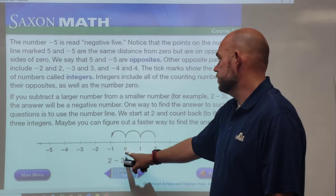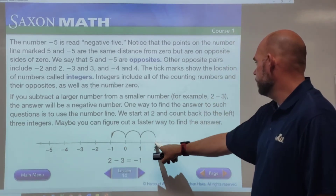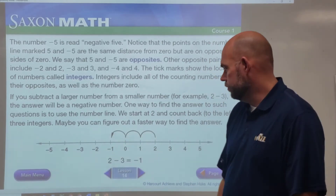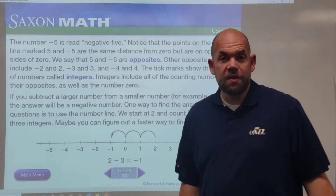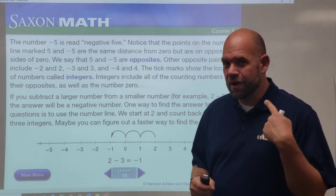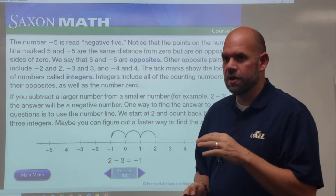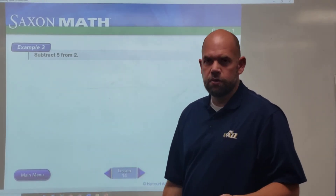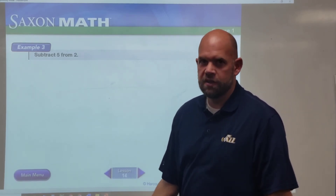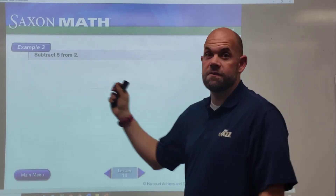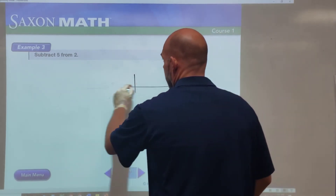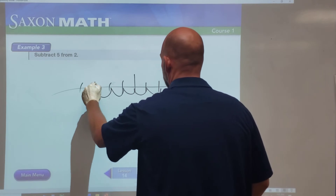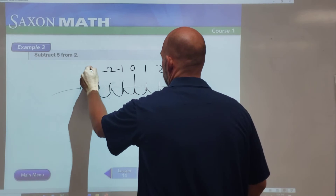If you subtract a larger number from a smaller number — for example, if you start at two and subtract three — that means you're going three steps to the left: one, two, three. That ends you up at a negative number. So two minus three equals negative one. We haven't done that before and it's kind of weird unless you can picture it on a number line. Similarly, if we subtract five from two, starting at two and going left one, two, three, four, five — we end up between positive two and negative three.